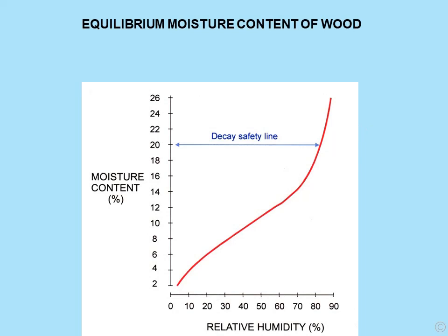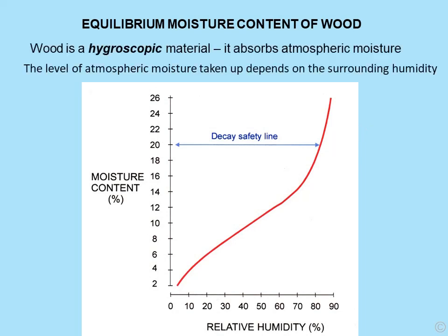The equilibrium moisture content of wood. It's important to appreciate that wood is a hygroscopic material — it absorbs atmospheric moisture. The level of moisture taken up depends on the surrounding humidity. For example, at 80% relative humidity, we would expect wood to have a moisture content of probably 18-19%, getting up towards 20%. On the other hand, if we maintain the wood at 45% relative humidity, we would expect an air-dry moisture content in equilibrium with the air of around 10% or 11%.